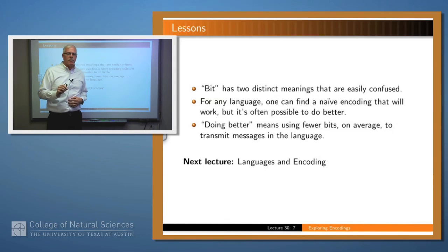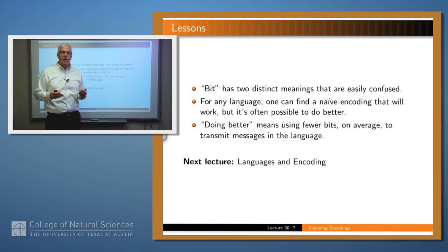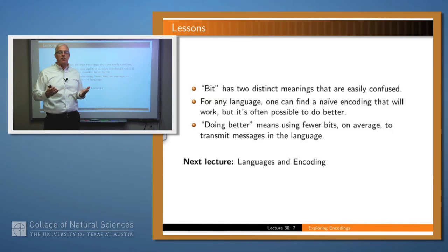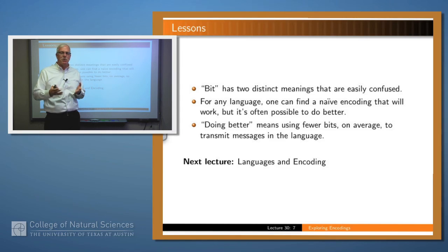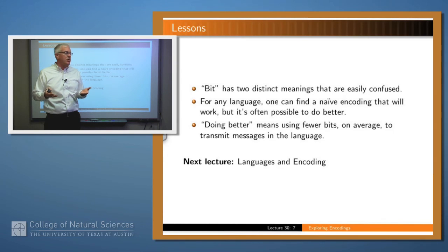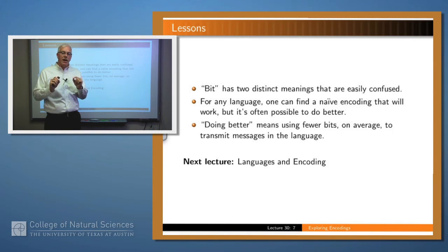So what did we learn? We talked about two different meanings of bit: binary digit, which is a discrete thing, and a measure of information content, which is a continuous quantity. For any language — artificial or natural — you can come up with an encoding that works, but the question is whether it's the best encoding you could have. Doing better means using fewer bits on average per symbol in the language as we transmit them.